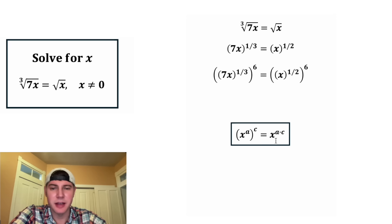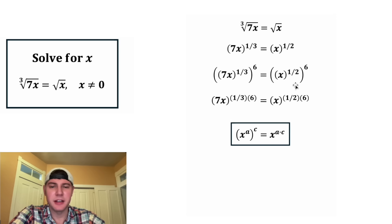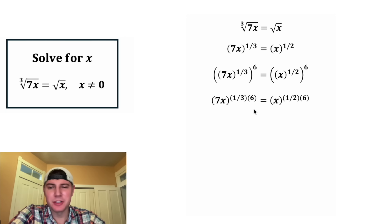that's the same thing as x to the a times c. So this 7x to the one third, to the six, will be 7x to the one third times six. And on the other side, this x to the one half to the six is going to be x to the one half times six. And now on the left hand side, one third times six is six thirds, which is two.